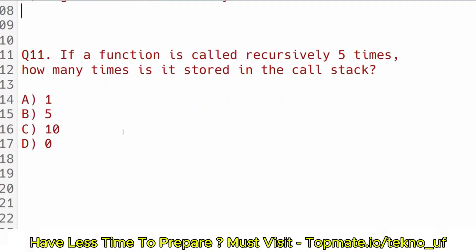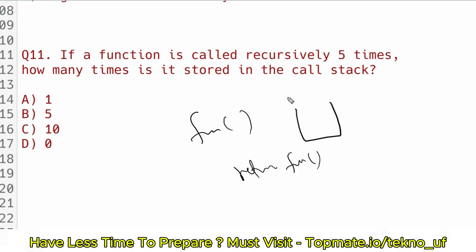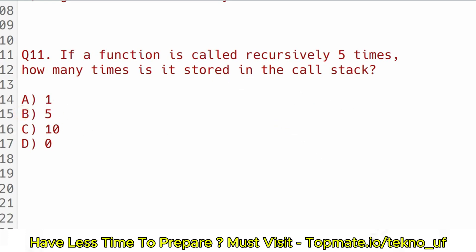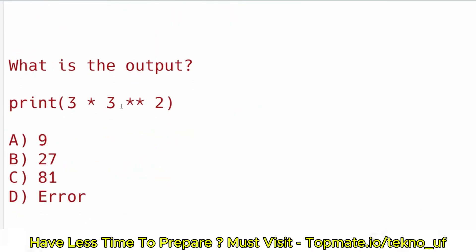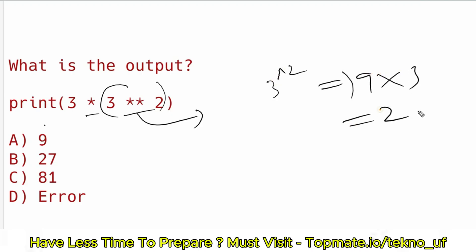What does DNS stand for? The answer is Domain Name System. If you have basic networking knowledge, you will know this. Next: if a function is called recursively five times, how many times is it stored in the call stack? The answer is five times. Next: what is the output of print(3 * 3 ** 2)? The exponentiation operator ** has higher precedence, so 3 ** 2 = 9, then 9 * 3 = 27. The answer is option B: 27.